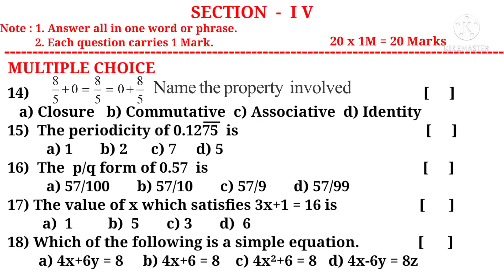Sixteenth question: the P by Q form of 0.57 is — options A, B, C, D — from Chapter 1, Rational Numbers. Seventeenth question: the value of x which satisfies 3x plus 1 equals 16 is — options A, B, C, D — from Chapter 2, Linear Equations in One Variable. Eighteenth question: which of the following is a simple equation — options A, B, C, D are given — from Chapter 2, Linear Equations in One Variable.